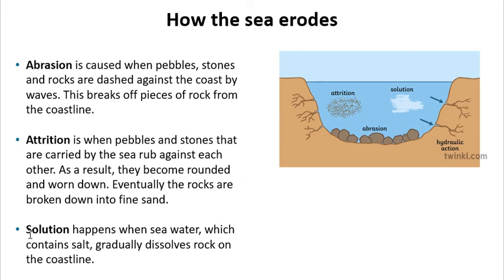The final way the sea erodes is solution. The sea contains salt — you can't drink seawater, it's not good for you. That salt has a corrosive effect, breaking down rocks and the coastline. You can't actually see solution happening — you can't physically see the salt — but it's there in mineral form, and those minerals break down the coastline and the rocks carried within the wave's load.